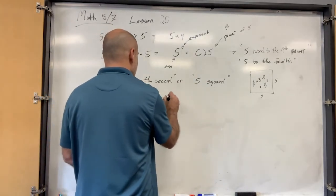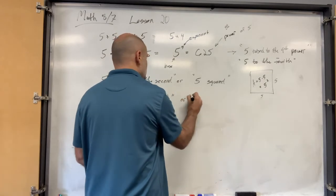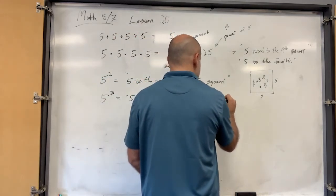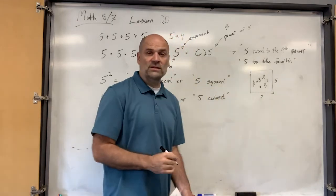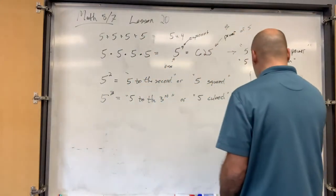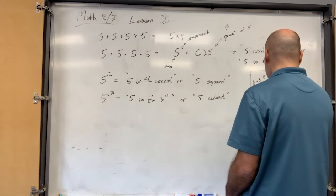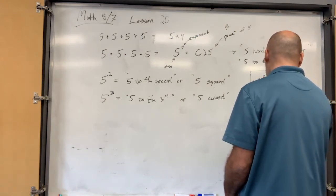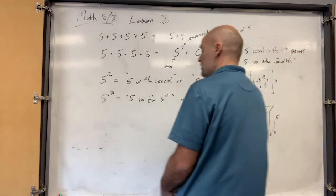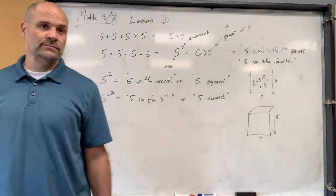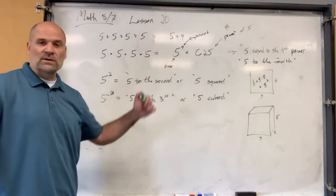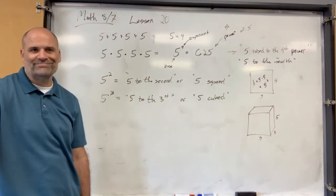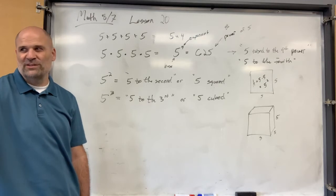5 to the 3rd power, or 5 to the 3rd, or 5 cubed. So when you cube something — when you cube the dimension 5 — this is what it looks like. Here's my square. But when you cube it, you add another dimension. This is a 5 by 5 by 5 cube. How do you find the volume of that cube?